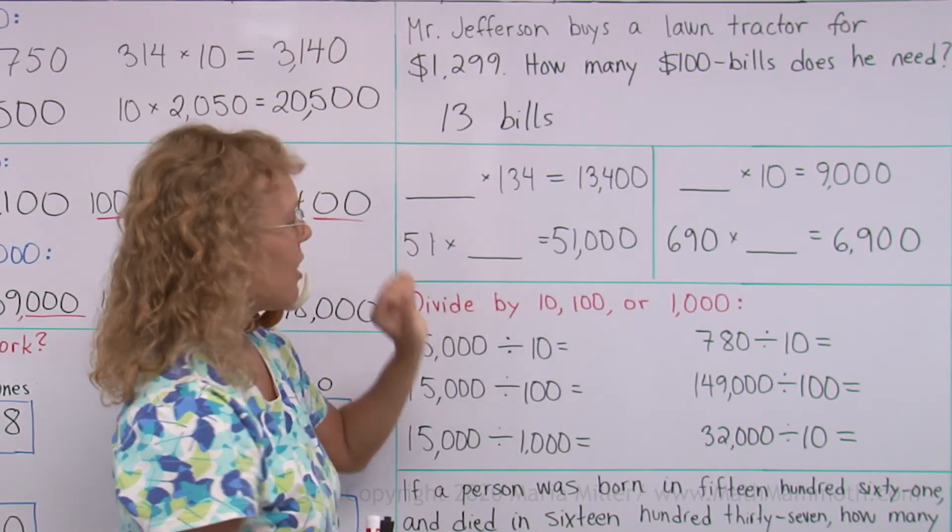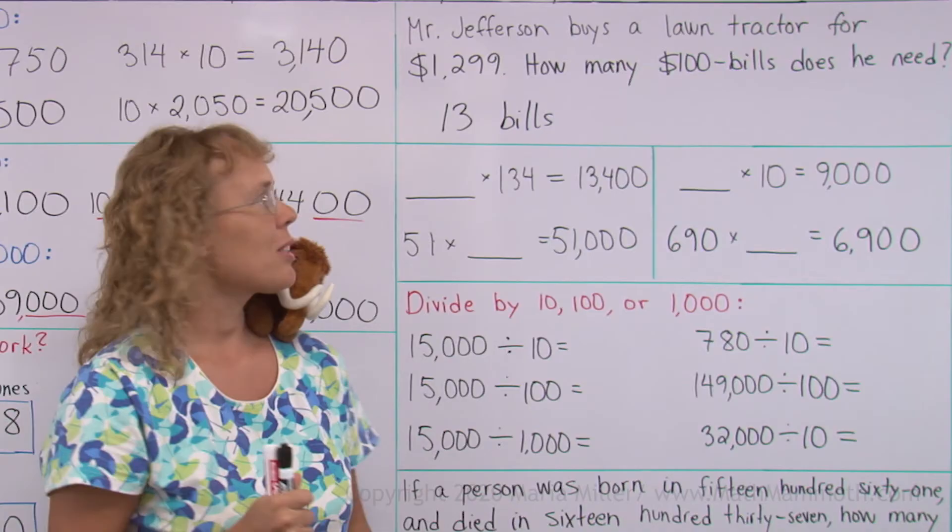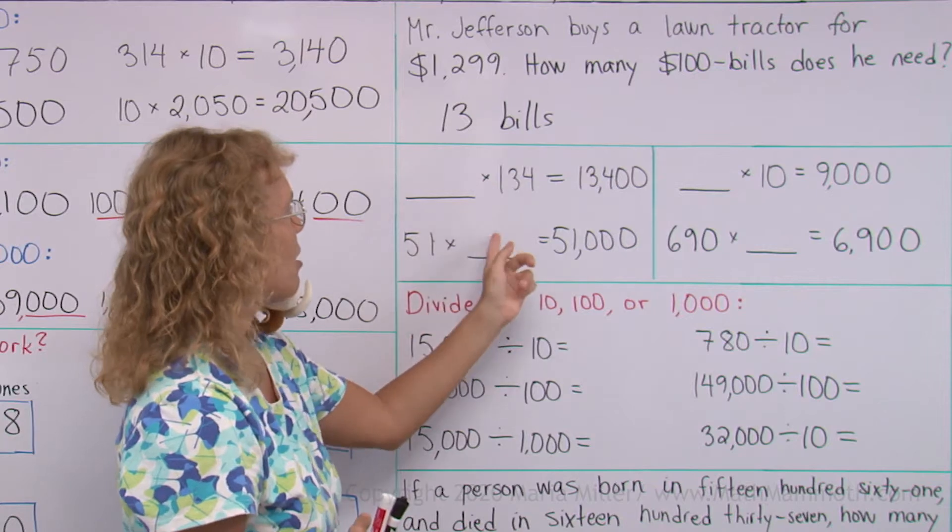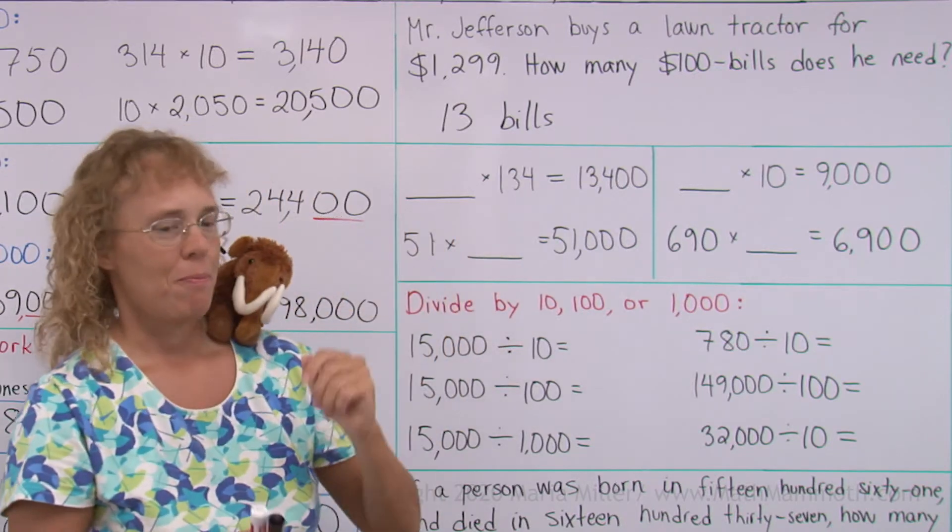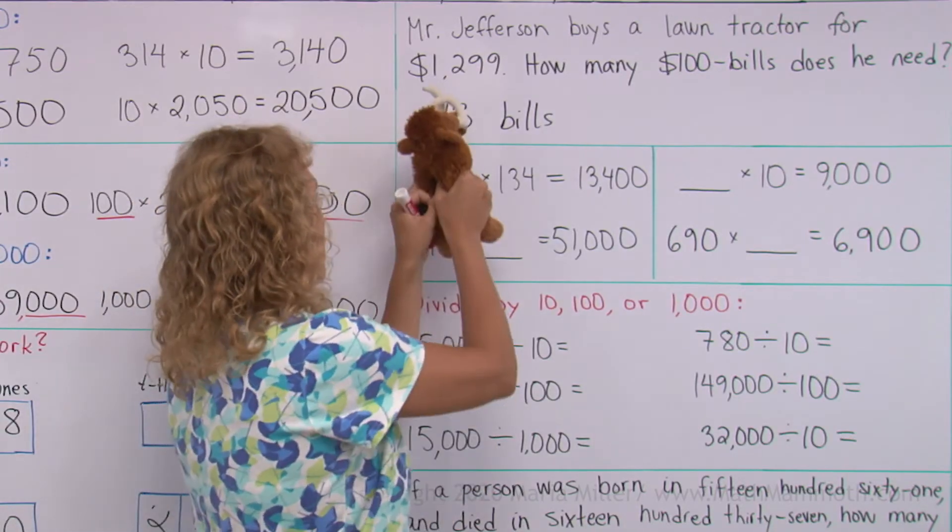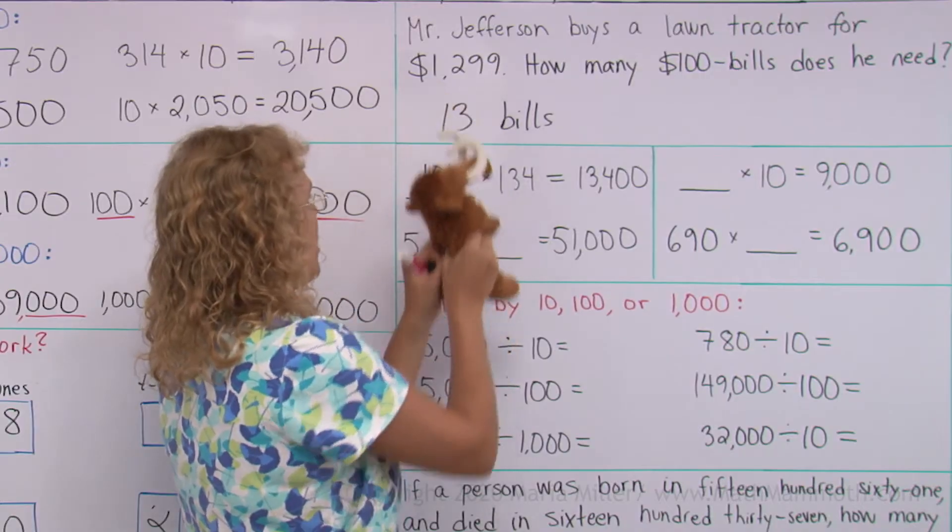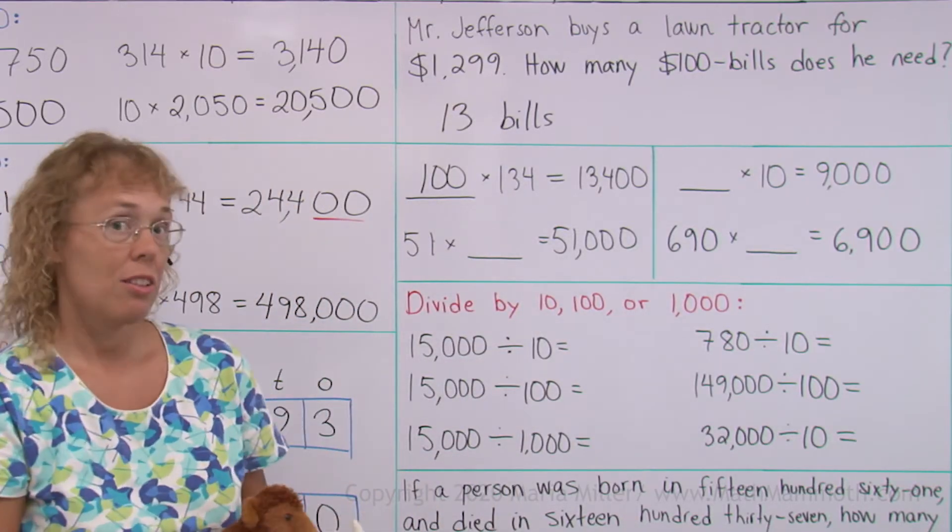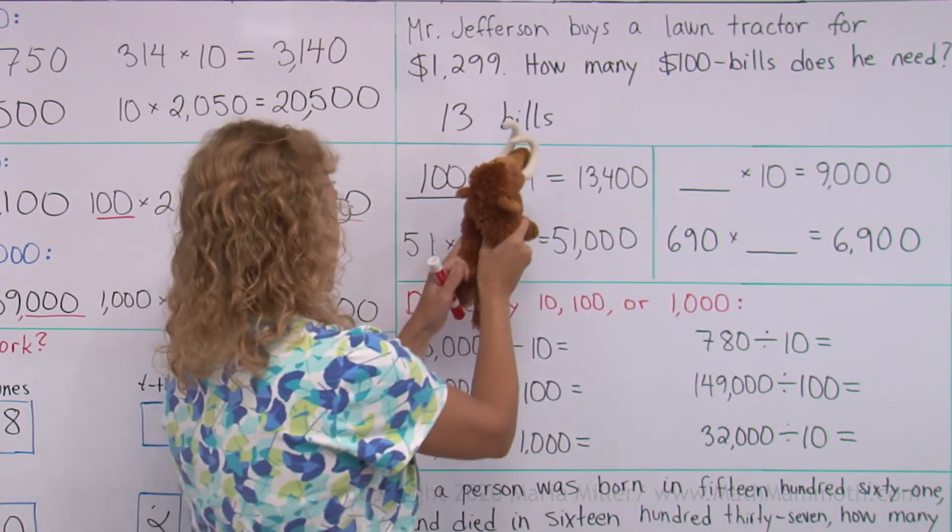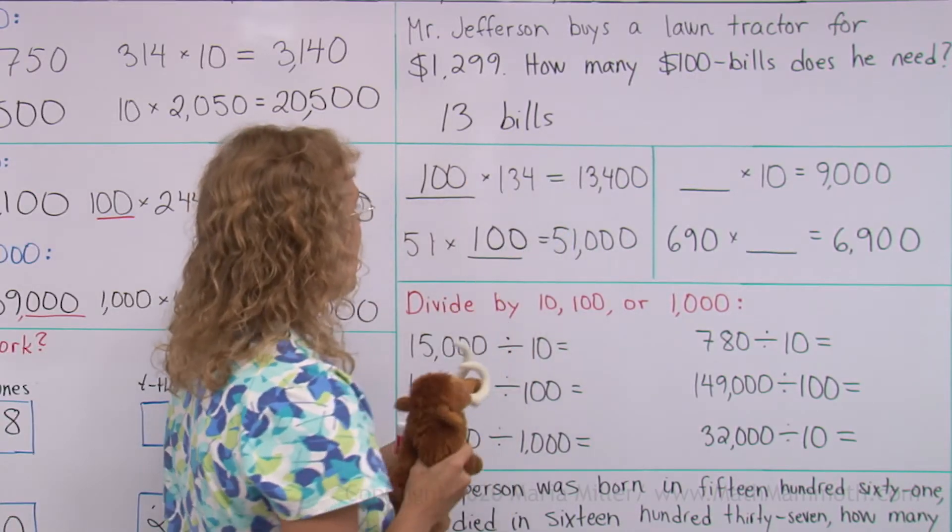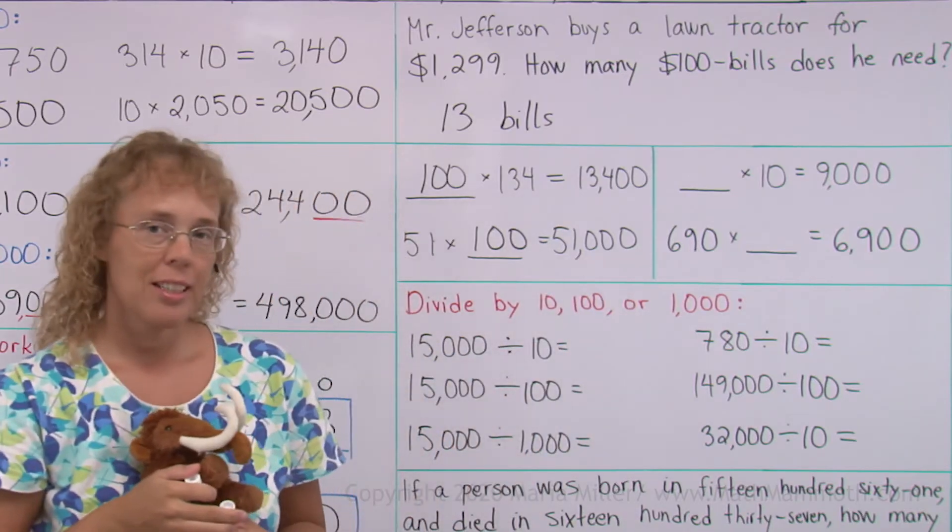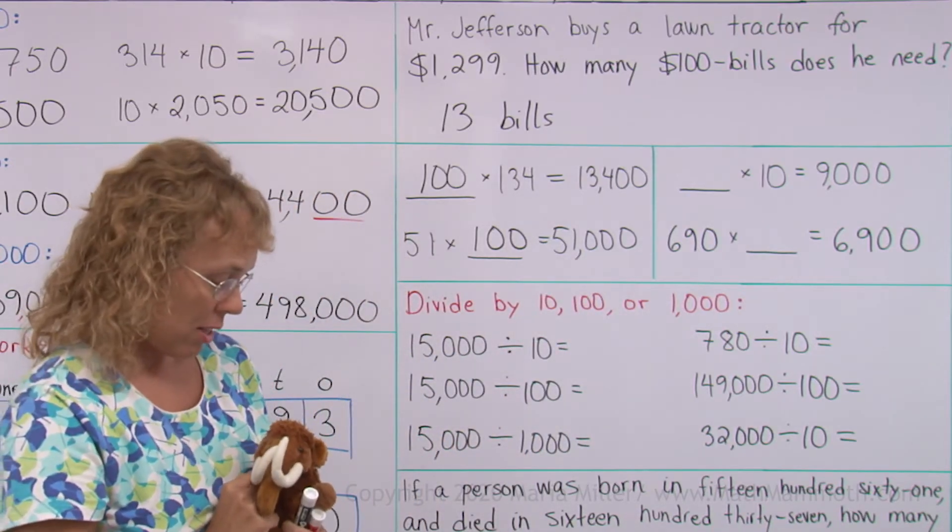Now over here, we have some missing factor problems. Remember, a number you're multiplying is called a factor. So some factors are missing. What number goes here? I think, yeah, Matthew, come on, you can write the answers. Then you guys can check. Did Matthew get it right? Hundred times 134, two zeros here, two there. Yep. Okay, 51 times 100, 51,000, did Matthew get it right? Not this time, Matthew. You have an error. Go fix it.